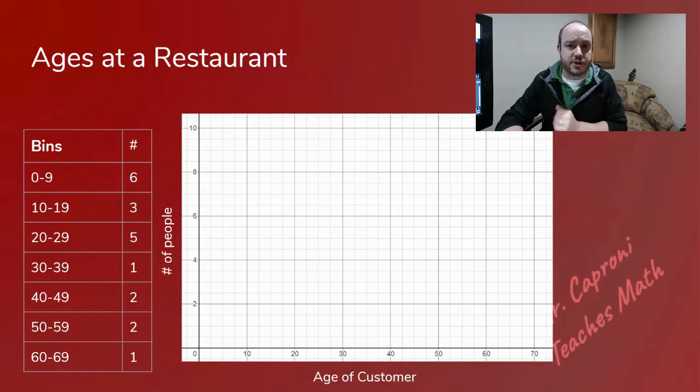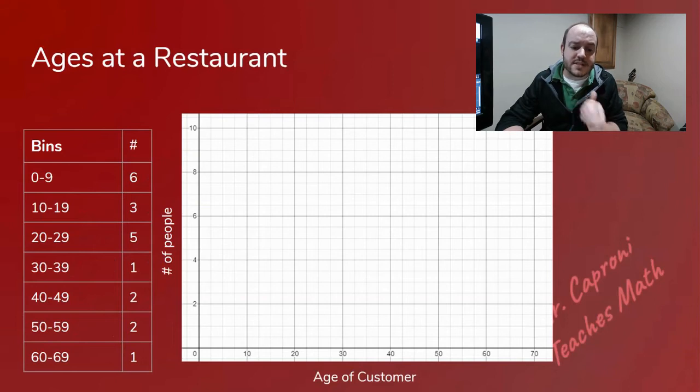So by having all of our bars run into each other we fill the whole graph, which is a requirement for a histogram. So our first bar from zero to nine would look something like this. Notice it goes up to six because that's how many people fell in that bin.